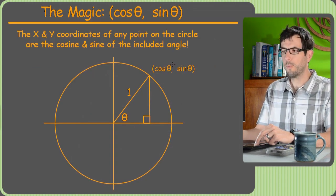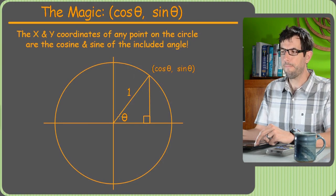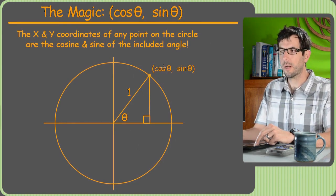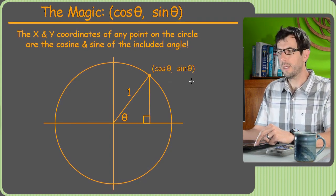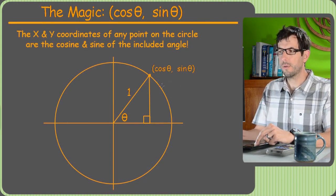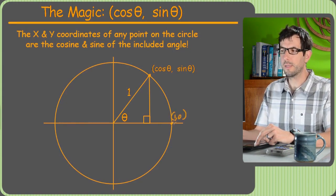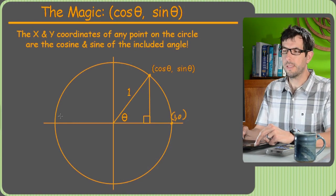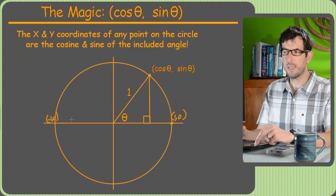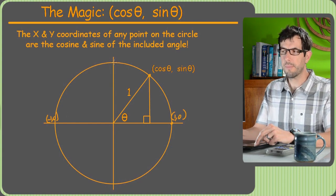Here's a more formal drawing. For any angle theta, the coordinates at the tip of the triangle are going to be cosine theta, sine theta. Because this circle has a radius of 1, this point is (1, 0), so the biggest cosine could ever be is 1. Similarly, this is (−1, 0), so the smallest cosine could ever be is −1. The sine will do the same thing — it'll go from positive 1 to negative 1.